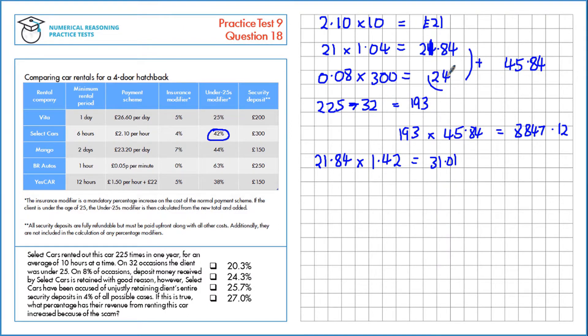Again, we've got to add on this £24 here, and multiply by the 32 under 25s. So £31.01 plus the £24, multiplied by 32 people, which is £1,760.32.